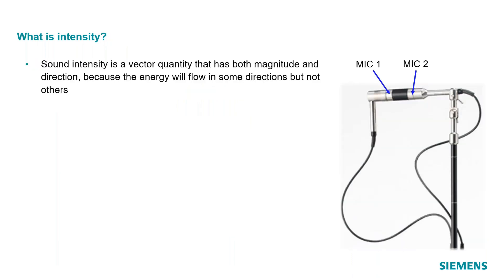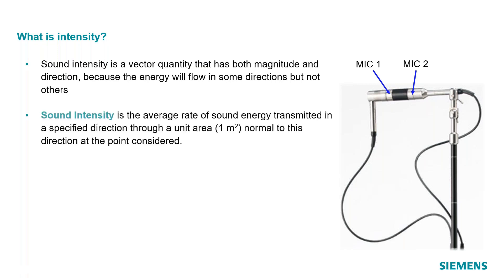So sound intensity is a vector quantity. This is a picture of a common intensity probe. It's got two microphones and that black piece of plastic in the middle is called the spacer. And using this tool, we can measure the sound intensity directly.